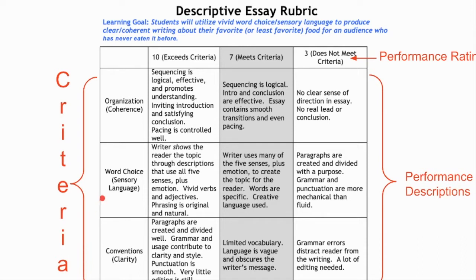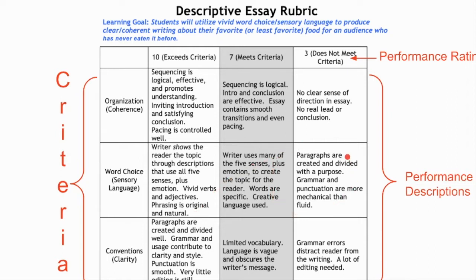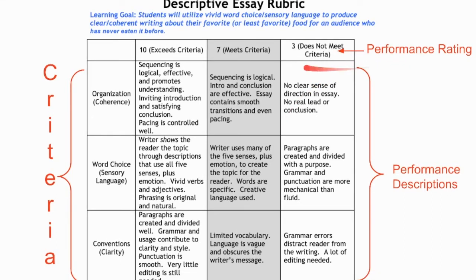We also need to write performance descriptions at different levels of performance. We might say that a student meets the criteria if they use many of the five senses plus emotion to create the topic for the reader, and that words are specific and creative language is used as well. Students exceed the criteria if the writer shows the reader the topic through descriptions that use all five senses plus emotion, with vivid verbs and adjectives, and phrasing that is original and natural. We can also write descriptions of performance that do not meet the criteria, and at the top we have different performance ratings such as meets, exceeds, or does not meet the criteria.